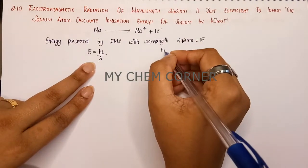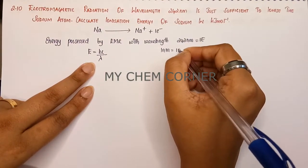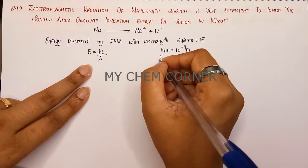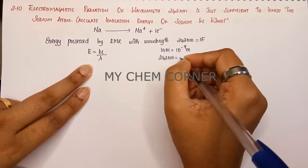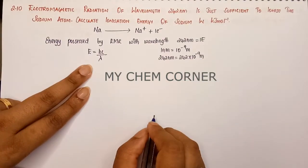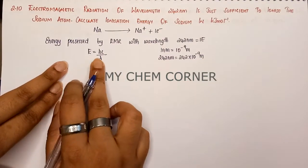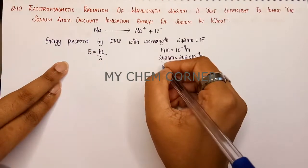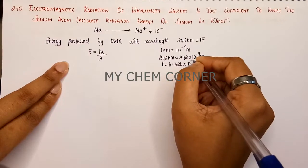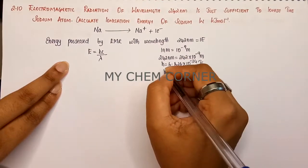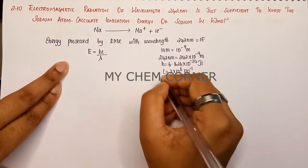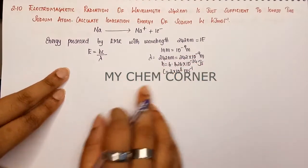Lambda is given in nanometers, so we need to convert it to meters. 1 nanometer equals 10 to the power minus 9 meters, so 242 nanometers equals 242 into 10 to the power minus 9 meters. The values we'll use are: h (Planck's constant) = 6.626 × 10⁻³⁴ joule·second, and c (velocity of light) = 3 × 10⁸ meters per second.